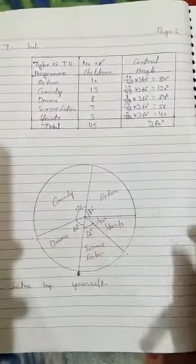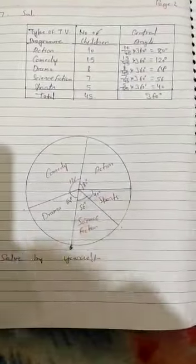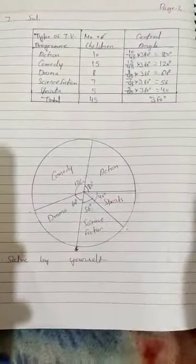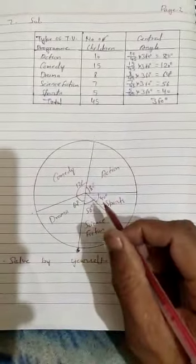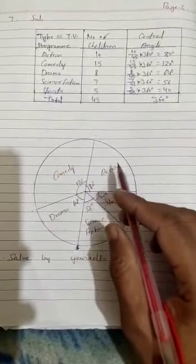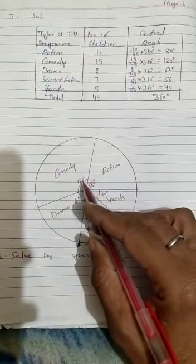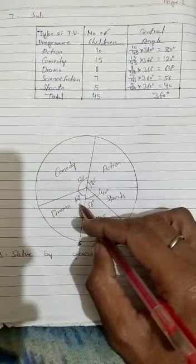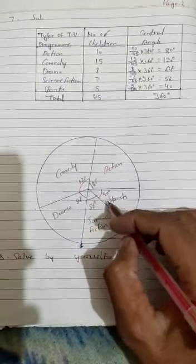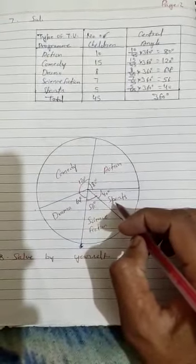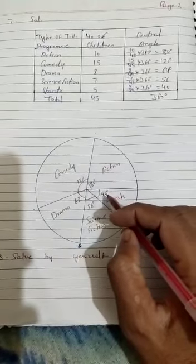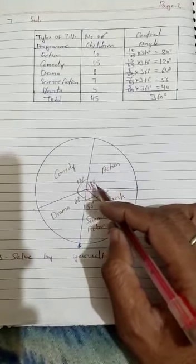Now first of all circle we can draw with usual radius 3 or 2 cm and we can draw angles. First of all 80 degree action, then 120 degree comedy, then 64 degrees, then 56 degrees, then 40 degrees. So in this way you will draw angles and you will label which part.